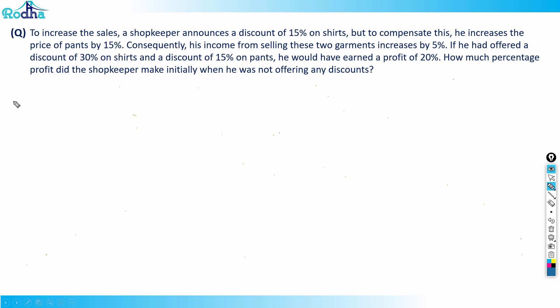Hi guys, let's look at this question. To increase sales, a shopkeeper announces a discount of 15 percent on shirts, but to compensate, he increases the price of pants by 15 percent. Consequently, his income from selling these two garments increases by 5 percent. If he had offered a discount of 30 percent on shirts and a discount of 15 percent on pants, he would have earned a profit of 20 percent. How much percentage profit did the shopkeeper make initially when he was not offering any discounts?